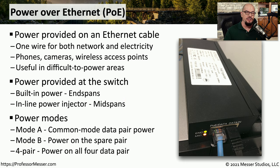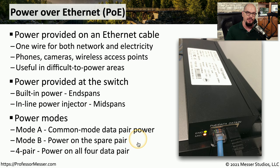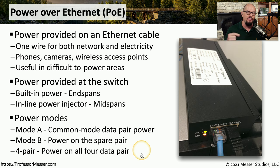There are a number of different ways to put power onto an ethernet cable. Mode A uses common mode data pair power, where the power is placed on the same wires as the data. Mode B uses spare pairs in the cable — especially useful if you're running 100 megabit ethernet — putting the power on the remaining pairs. And the four-pair mode puts power on all four data pairs, which is very common when using gigabit ethernet.